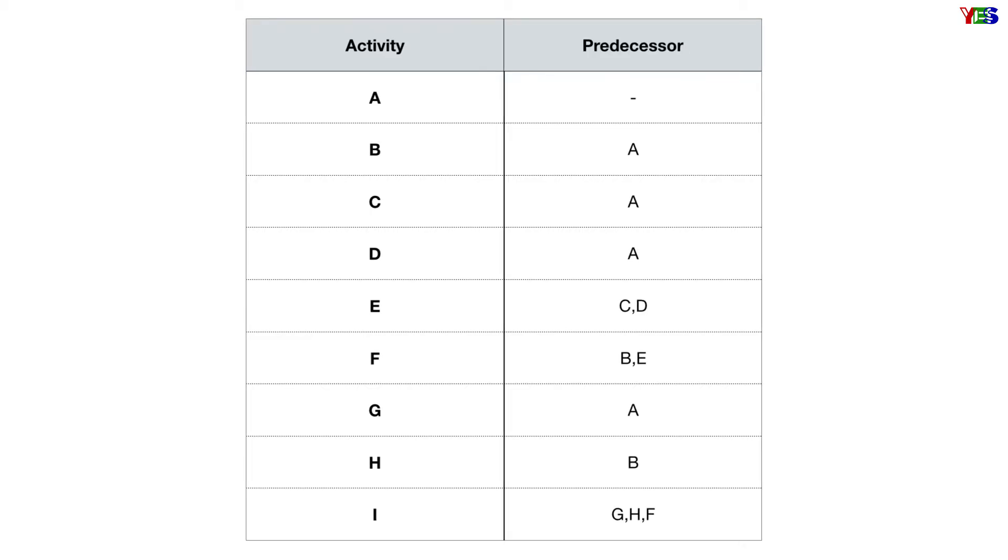Let's have this example to get better into it. Here we have A as initial activity since there is no predecessor, and B, C, and D are successors of A, or we can say A is predecessor of B, C, and D. So let's draw it in a network diagram.